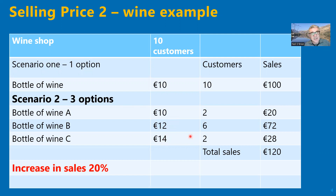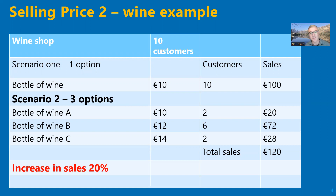What happens in this situation — and they've done numerous studies on this — is that most people go for the middle option. It's completely subconscious; we do it without thinking. People think the 10 euros is a bit cheap and 14 is more expensive, so they go for the middle one. On average, six people will go for the 12 euro one, two for the 10 euro, and two for the 14. In that case, sales have just grown by 20% simply by having three options.